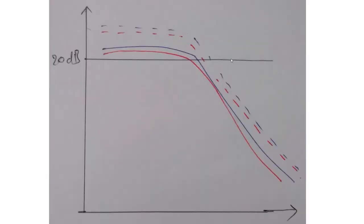This next audiogram represents the most common cause of hearing loss worldwide: presbycusis, or age-related hearing loss. Both air and bone conduction for the right and left ears are normal except at higher frequencies, where there is a drop. This is bilateral high-frequency sensorineural hearing loss, as the air-bone gap is less than 15 decibels. This pattern is seen in presbycusis but may also be caused by ototoxic drugs.